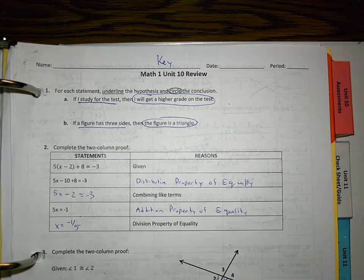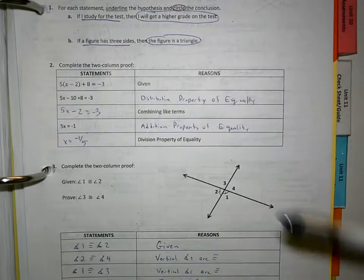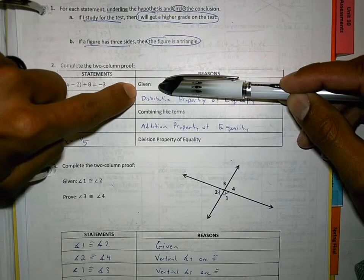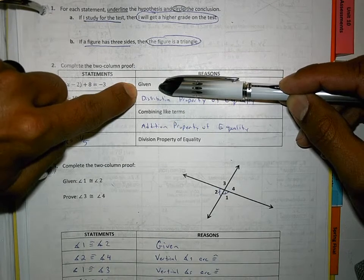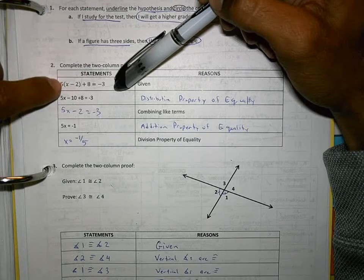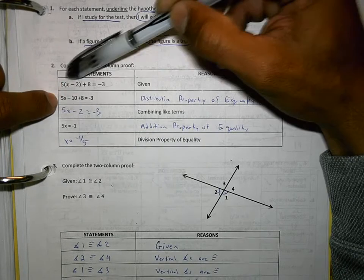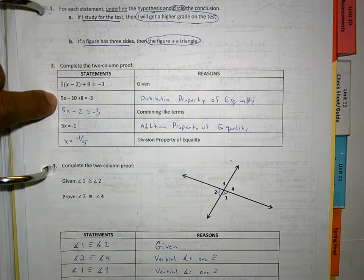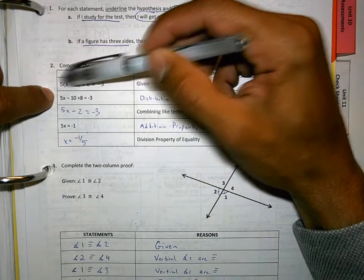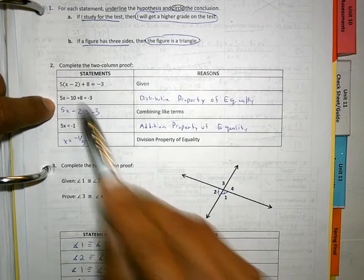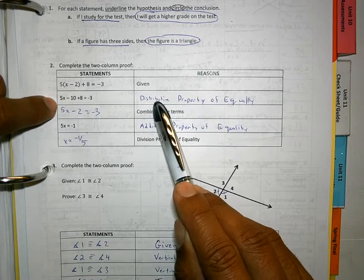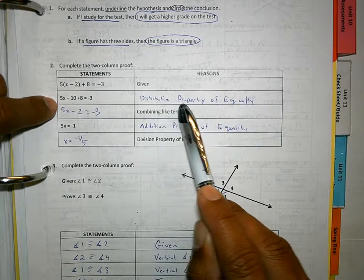In the two-column proof on number 2, what we're actually doing is we have to look at the statement. The very first reason is always given, and we have to figure out what the other person did between statement 1 and statement 2. If I look and I see that 5 multiplied to the x and 5 multiplied to the negative 2 and becomes 5x minus 10 plus 8 equals negative 3, then I know that they use the distributive property of equality.